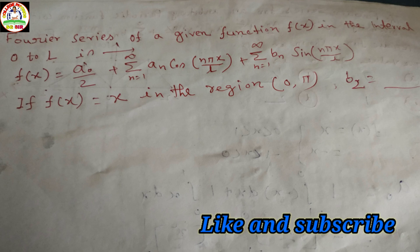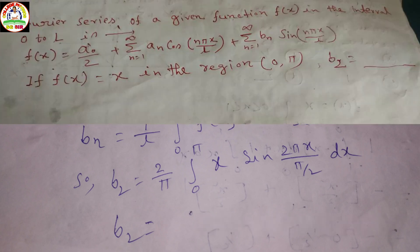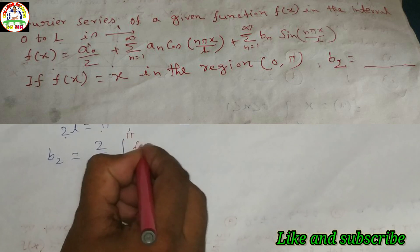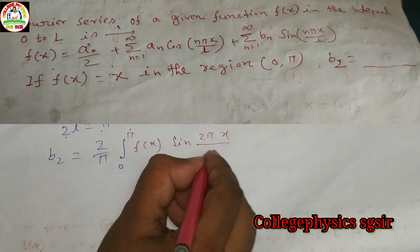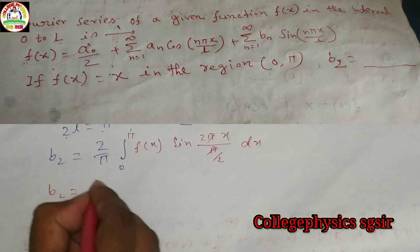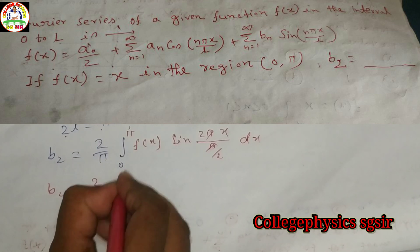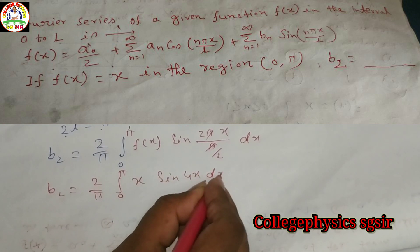If f(x) = x in the region 0 to π, what is the value of b₂? We know bₙ = (1/L) ∫₀²ᴸ f(x) sin(2πnx/L) dx. Here 2L = π, so L = π/2. Substituting, b₂ = (2/π) ∫₀π f(x) sin(2π·2·x / (π/2)) dx = (2/π) ∫₀π x·sin(4x) dx.